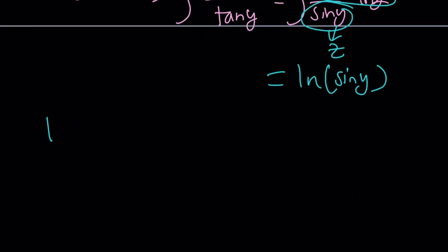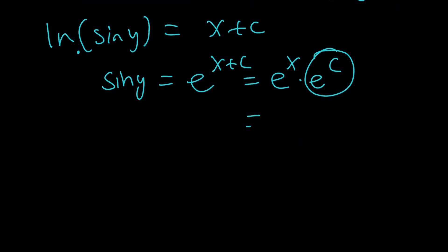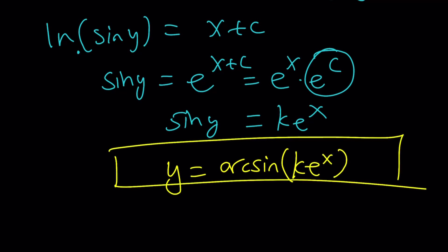Of course, this is if c is equal to zero. And from here, the base is e. So I can write this as sine y is equal to e to the x plus c, which can be written as e to the x times e to the c. And e to the c is another constant, which I can write as e to the x. If sine y is equal to k e to the x, I can arc sine both sides. Arc sine of sine y is going to be y. So y can be written as arc sine k e to the x, where k is a constant. But again, this is oversimplification if c is equal to zero.